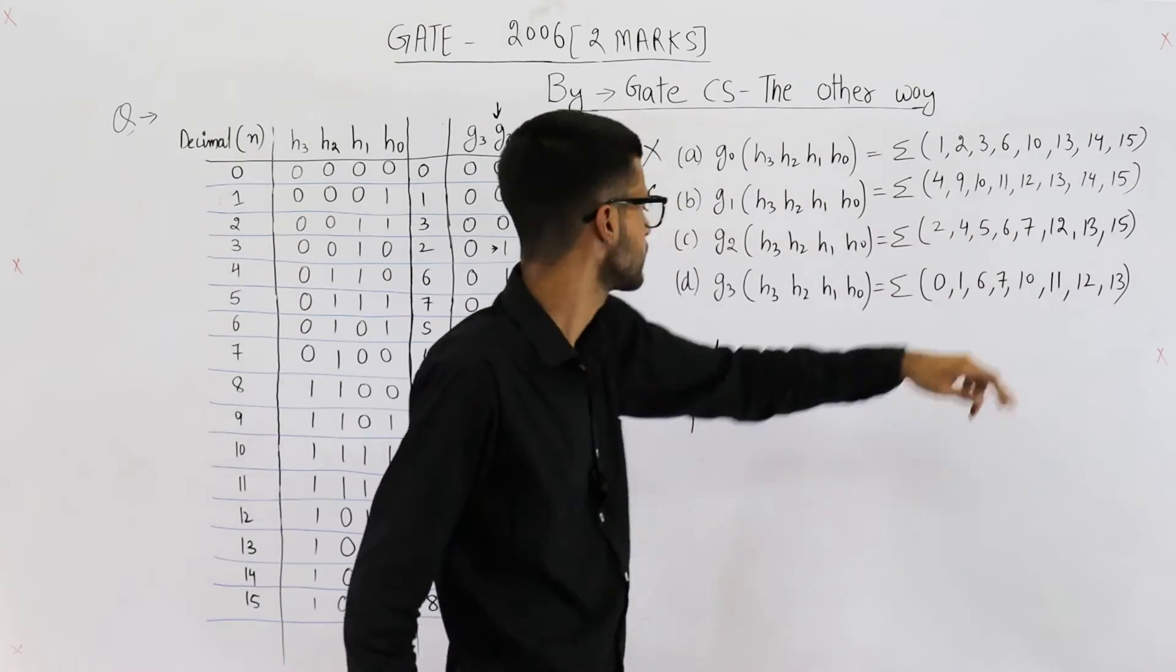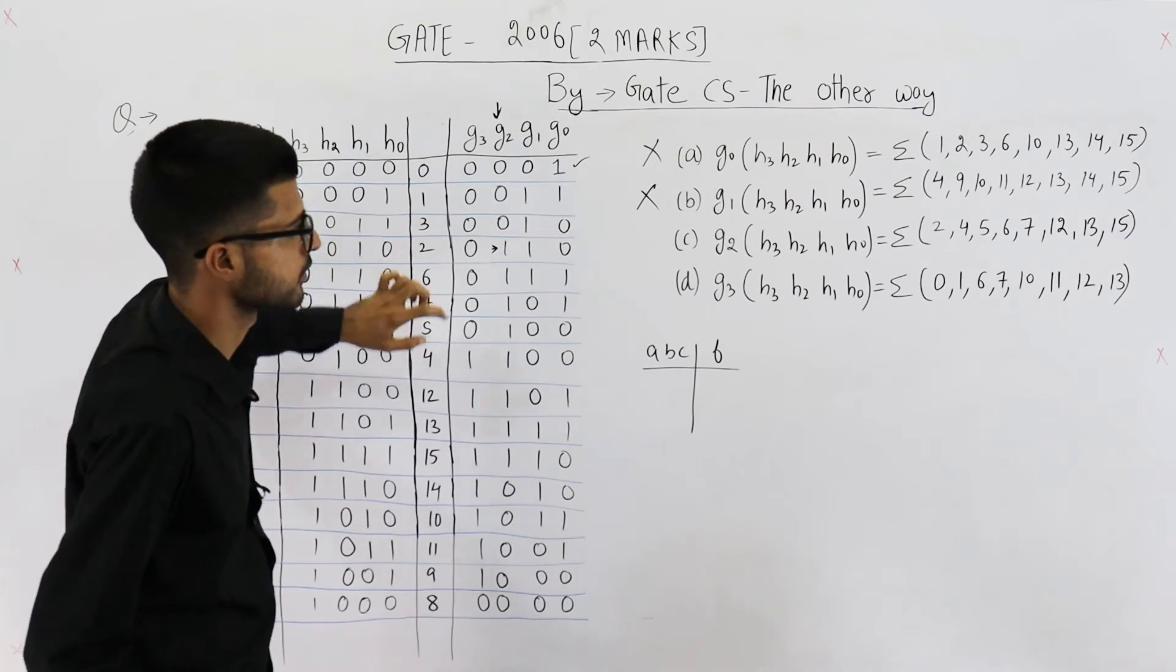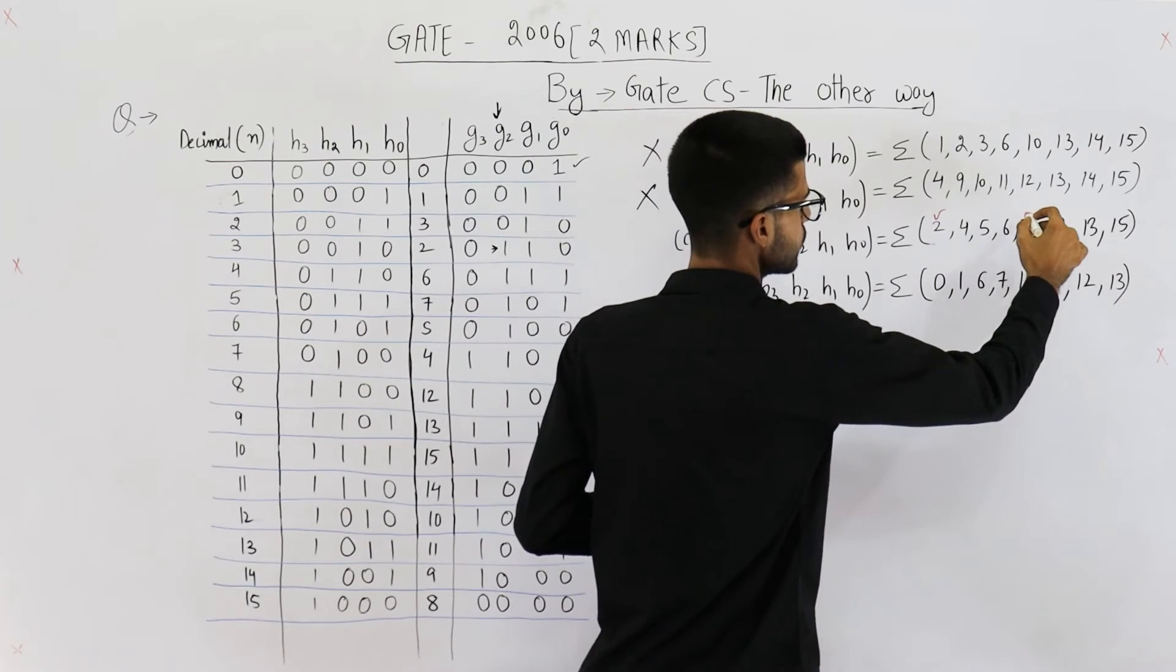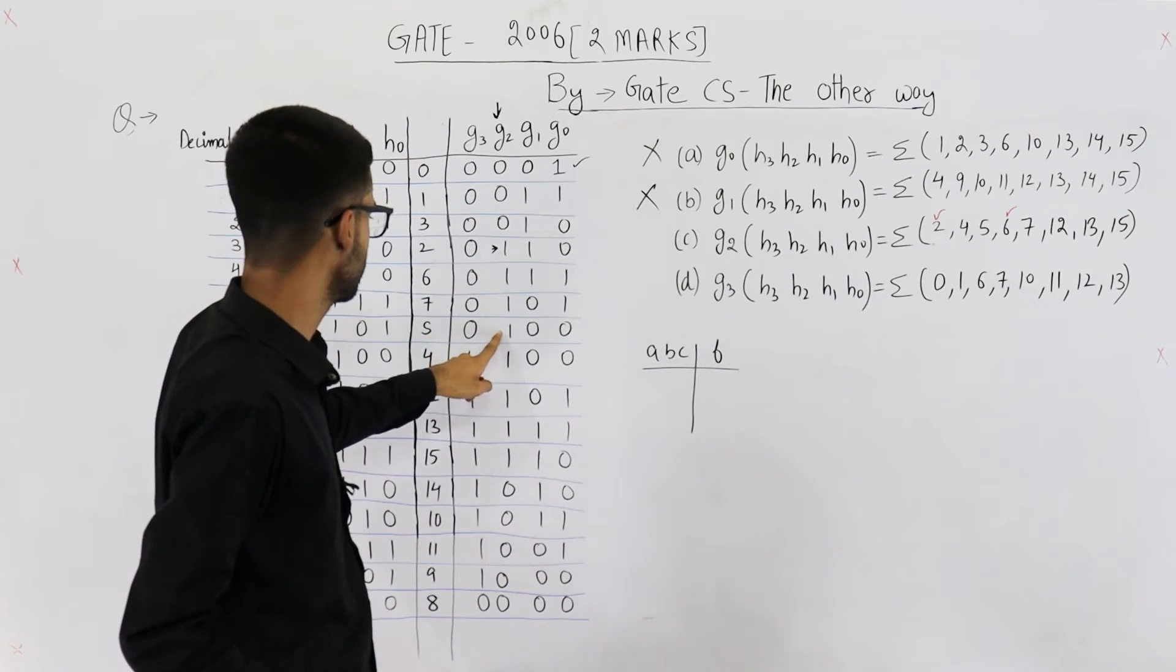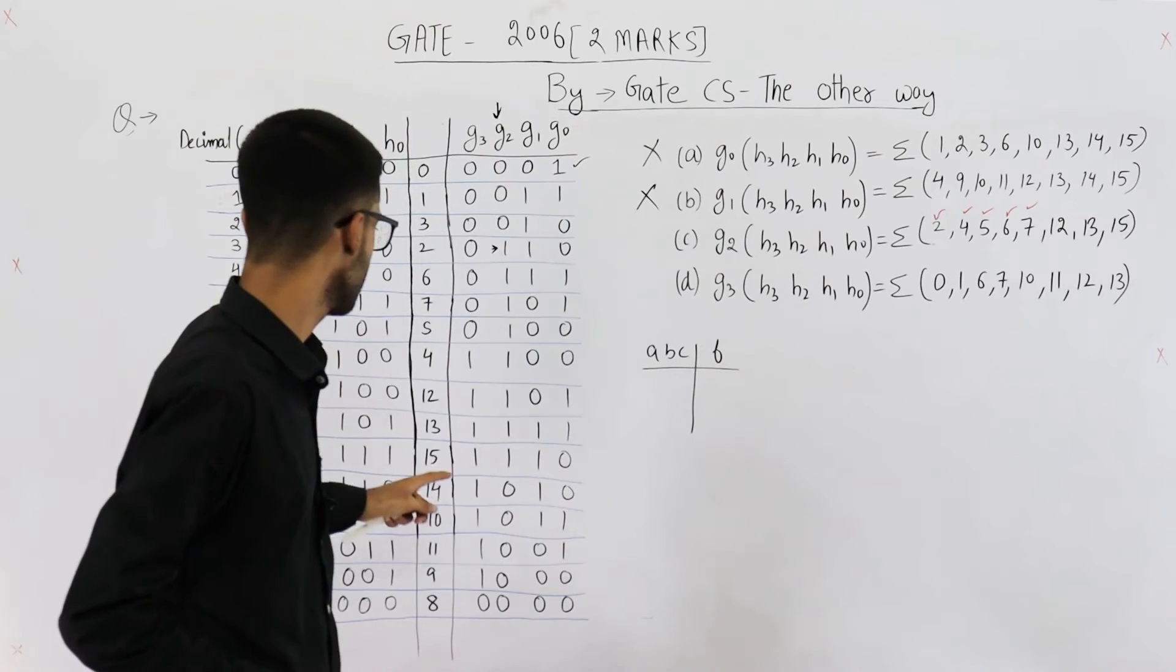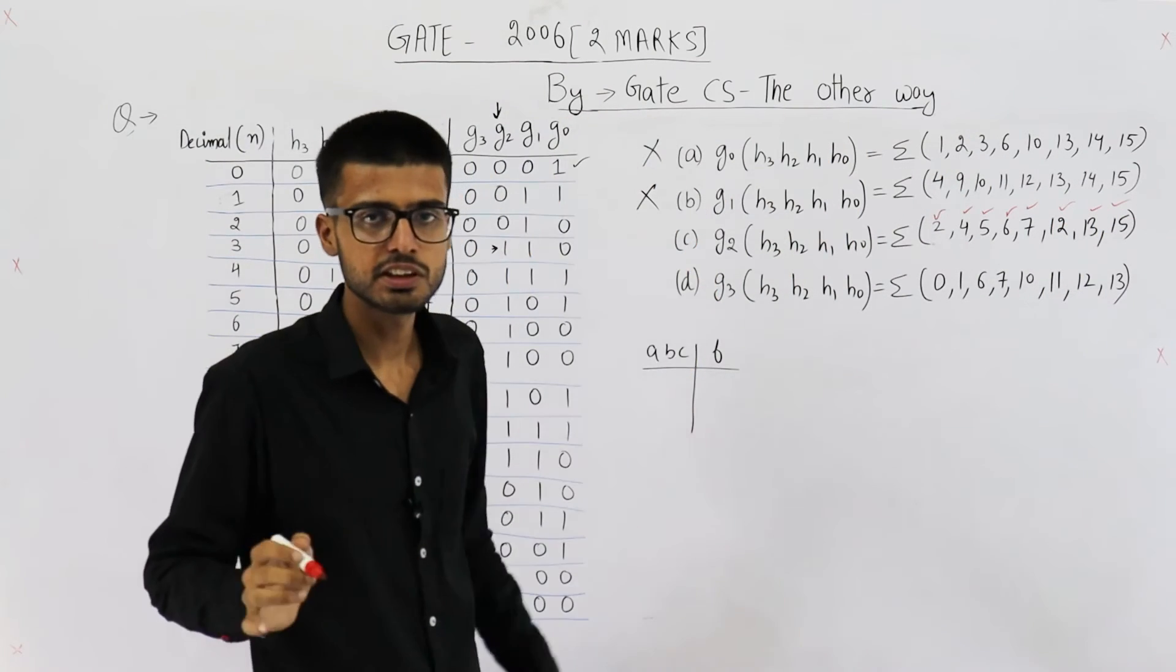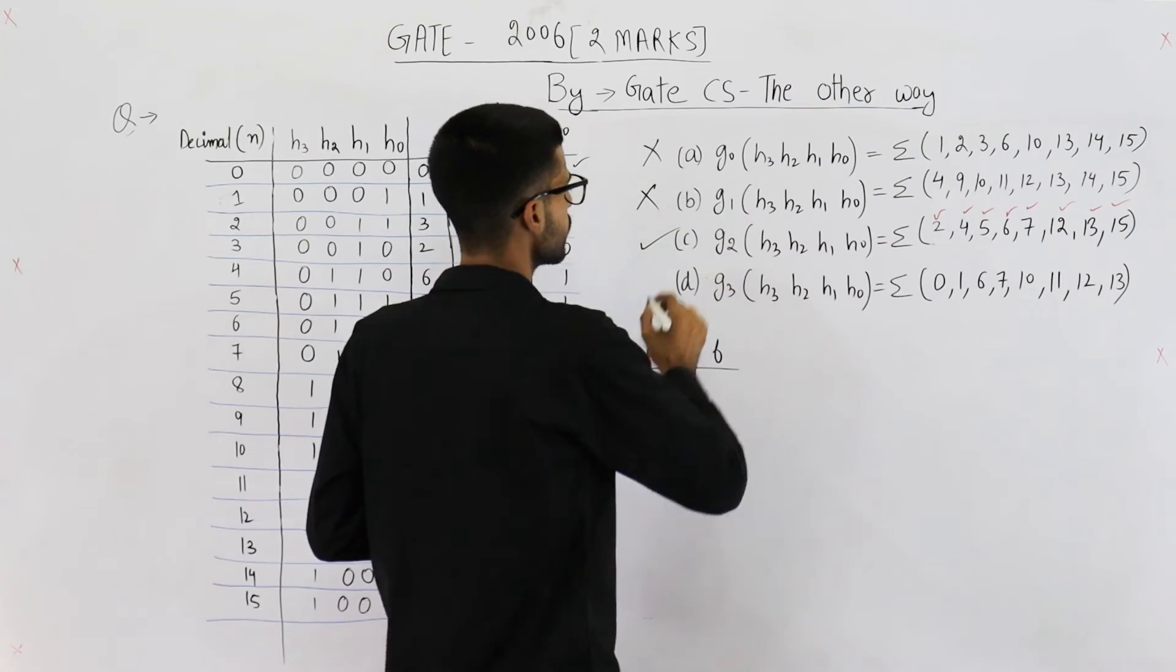Now they are saying 2, 4, 5, 6, 7 are the main terms of g2. See, these two are 2 and 6. 2 and 6. Let us use another color. We have 2. We have 6. 2, 6. Then 7, 5, 4. 7, 5, 4. Then you have 12, 13, 15. That's it. 12, 13, 15. You can see function g2 is defined correctly in option c. According to this table, g2 is correct. So your answer is option c.